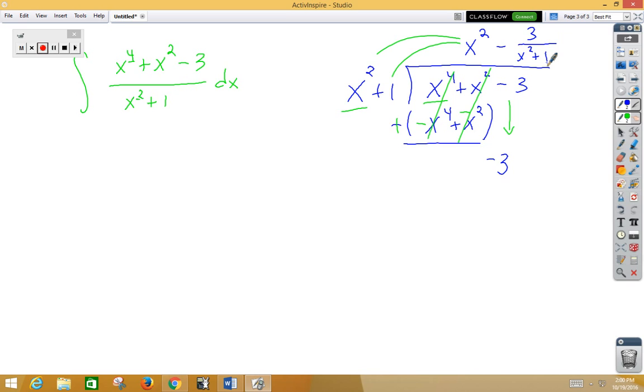We can now separate this integral as the integral of x squared dx minus the integral of, now I'm going to pull that 3 outside in front, which leaves a 1 over x squared plus 1 dx on the inside. Integrate x squared, you get x cubed over 3 minus 3. Have this memorized, inverse tangent of x plus c.